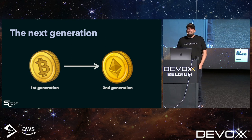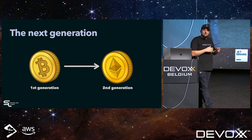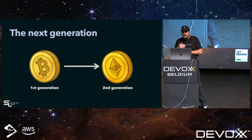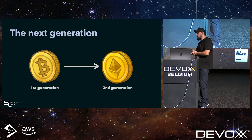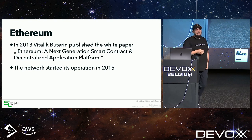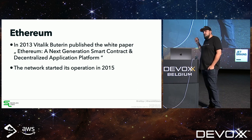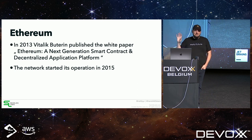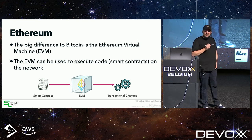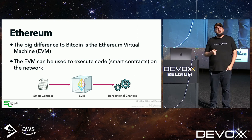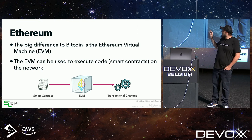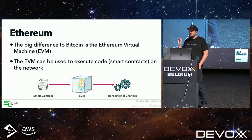After Bitcoin's success, many projects wanted to enter this space. One stands out as what we call the second generation: Ethereum. It started with a white paper in 2013 and the Ethereum network launched two years later. It's open source like Bitcoin, with one major difference: Ethereum introduced the Ethereum Virtual Machine, or EVM.